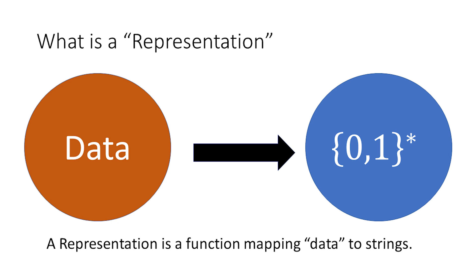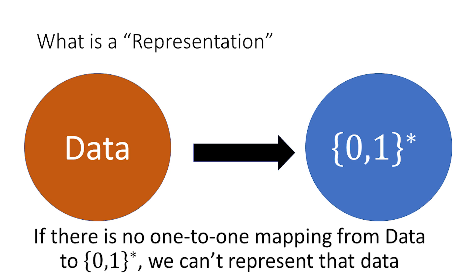The idea here is that if I want to compute on numbers, then I'm going to need to have my data — in this case numbers — represented as binary strings, so strings of zeros and ones. Something to take note of when making a representation of numbers is that we need to have a one-to-one mapping from the numbers to our strings. We want to make sure every single number has its own string representing it, so our mapping needs to be one-to-one. If the data we're trying to represent doesn't have a one-to-one mapping onto the set of strings, then we're just not going to be able to compute on data of that type.